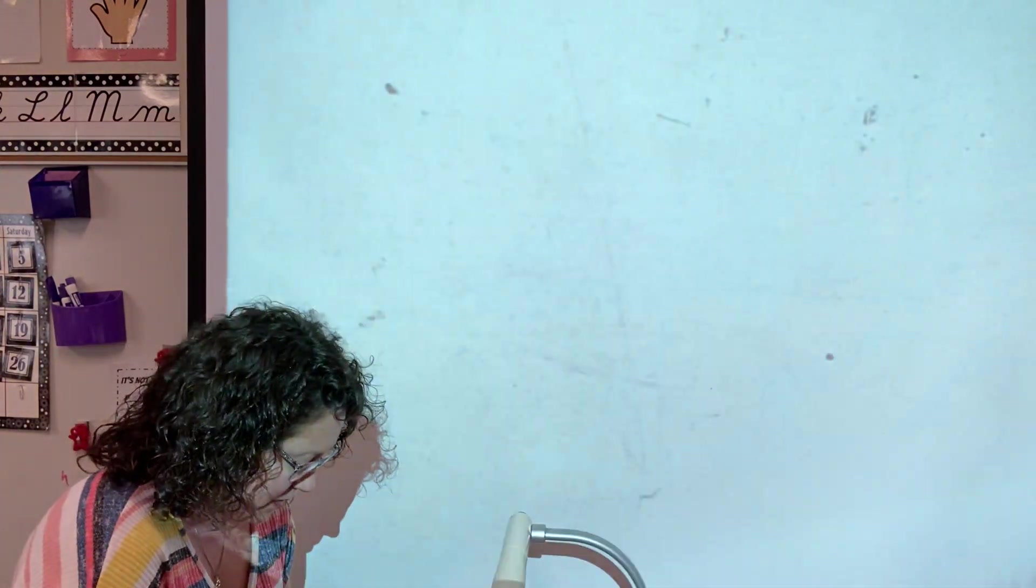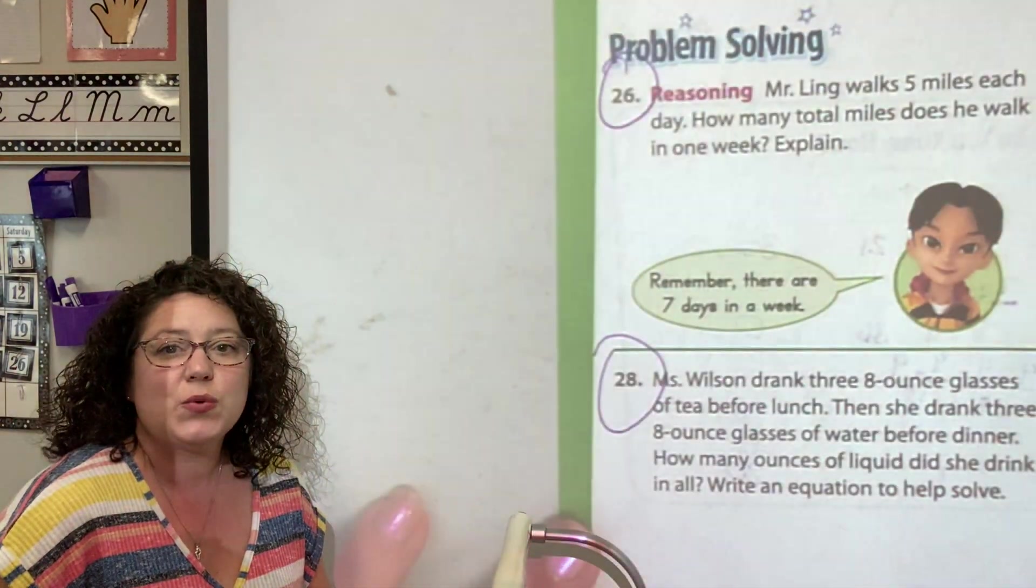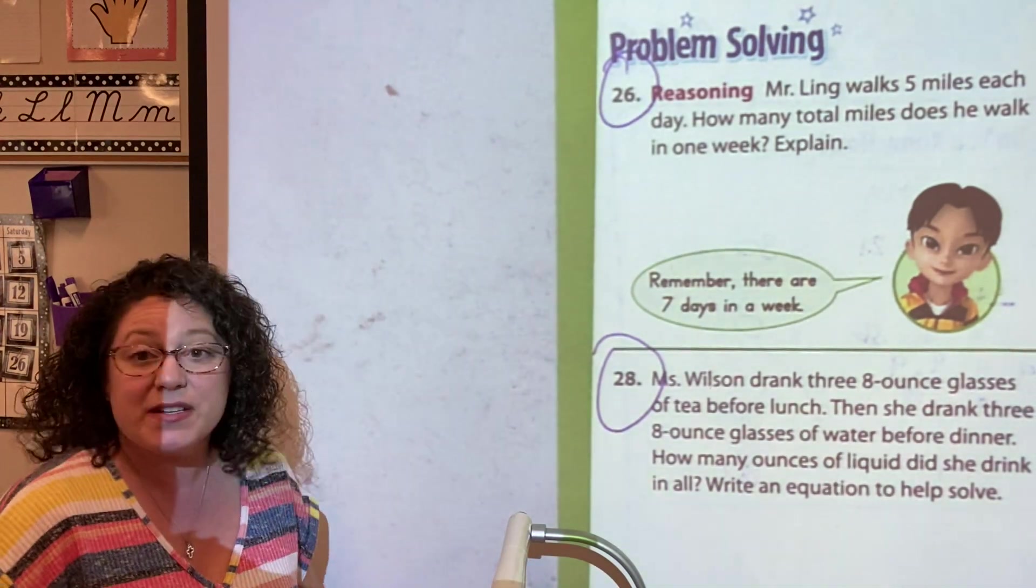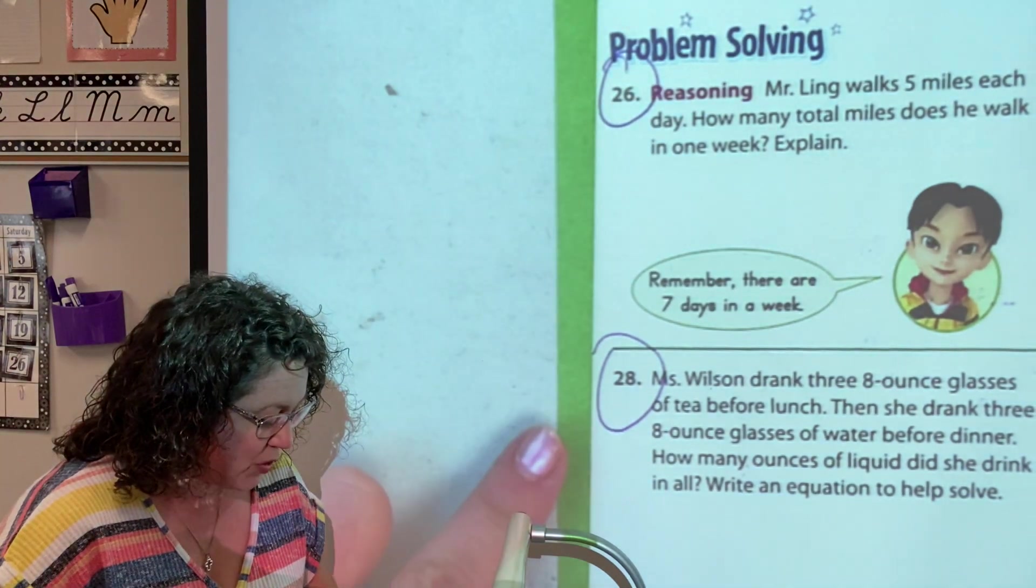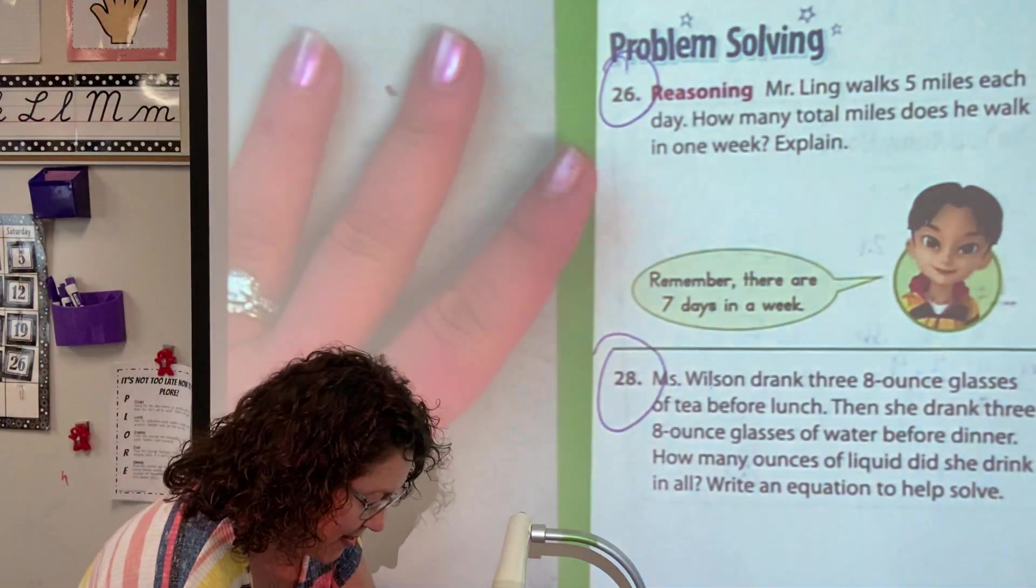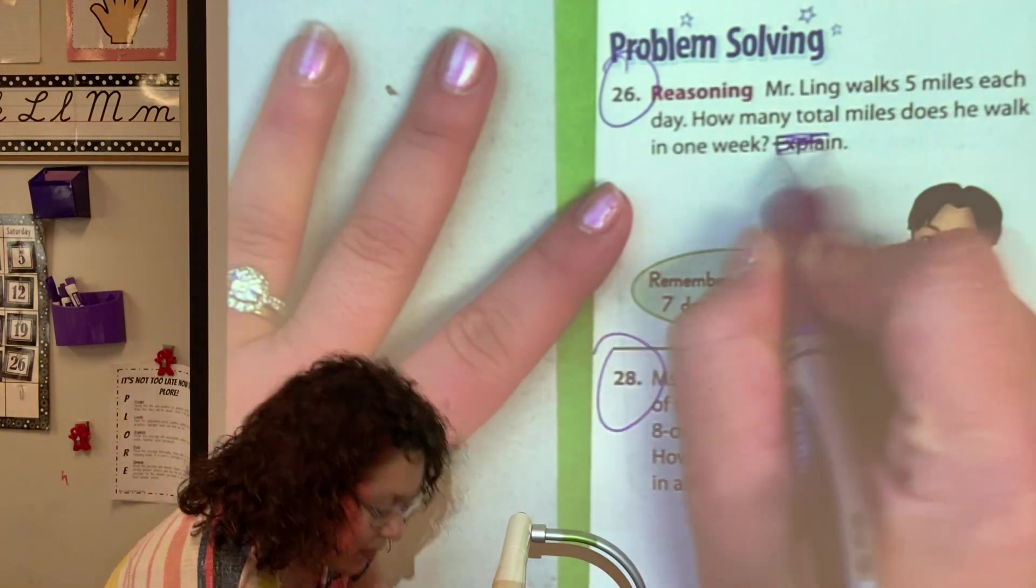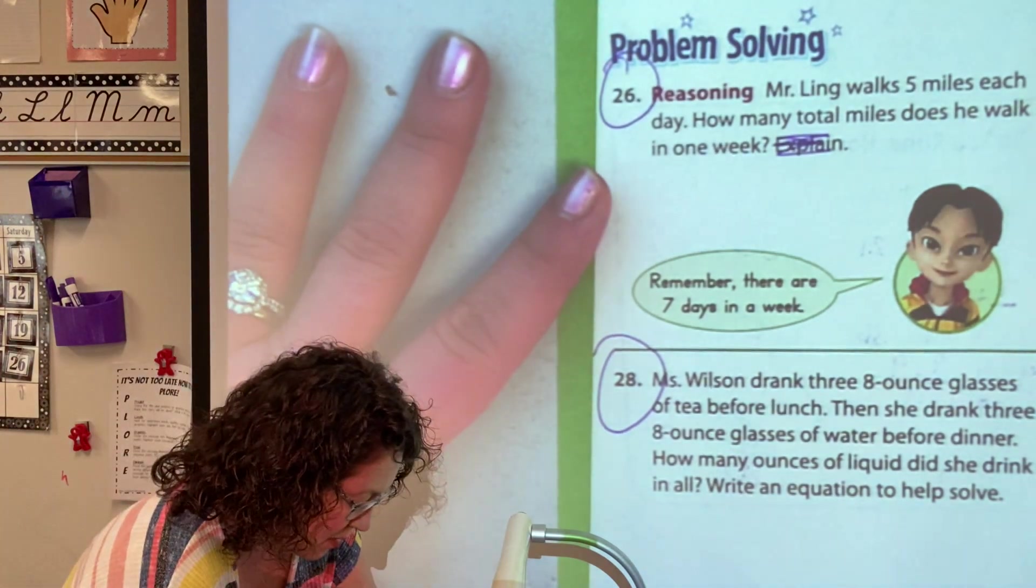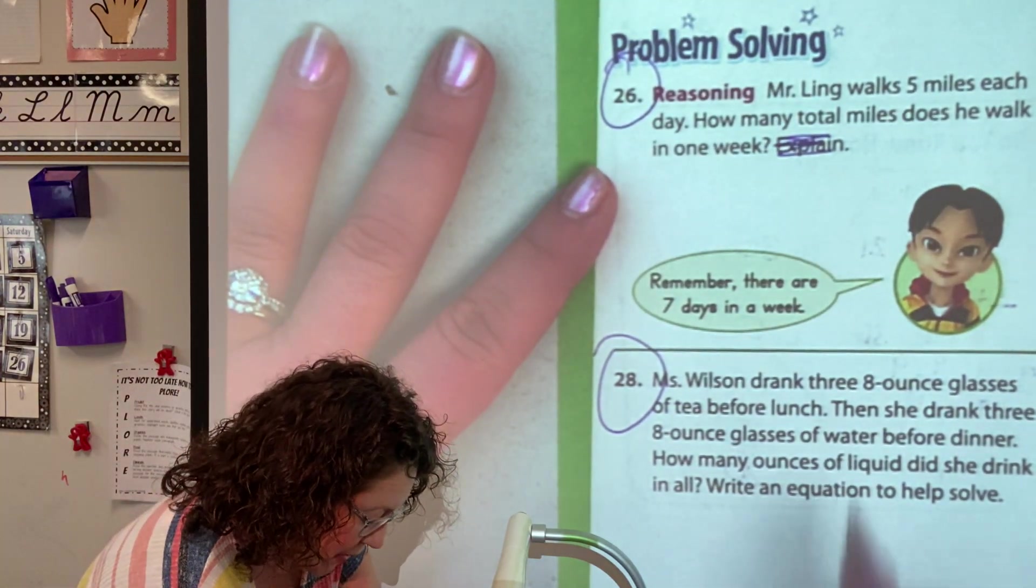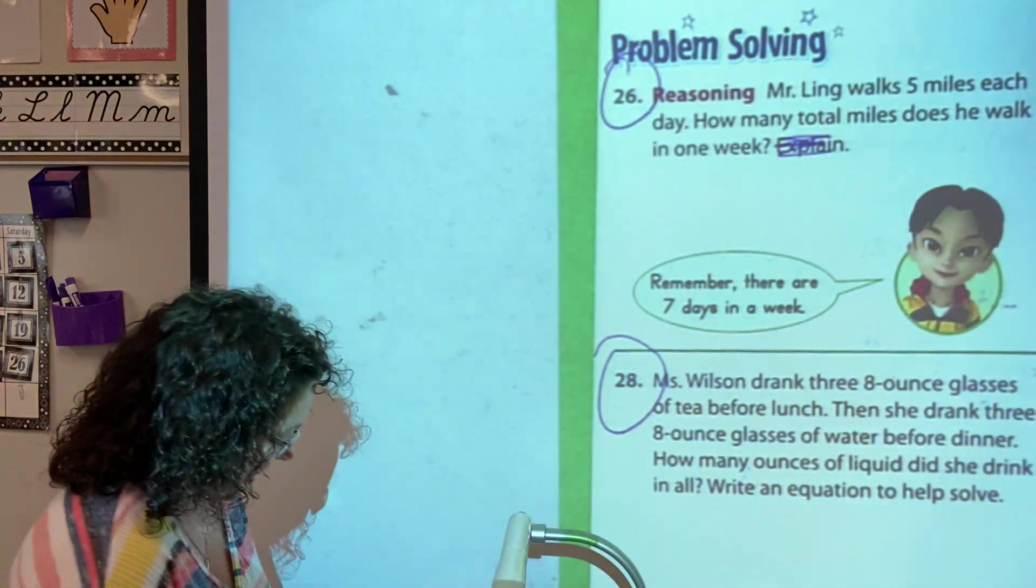And then make sure on the back, circle, twenty-six and twenty-eight are the discussion posts today. Not the two at the bottom. I want you to do twenty-six and twenty-eight. And twenty-six, I don't need you to explain. You can just type in your math problem and the answer. And twenty-eight, you can just type in your equation and the answer.